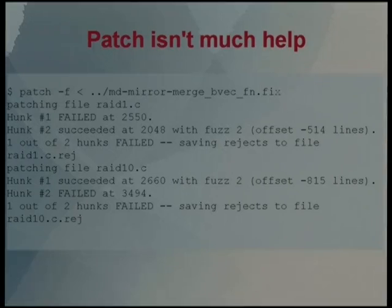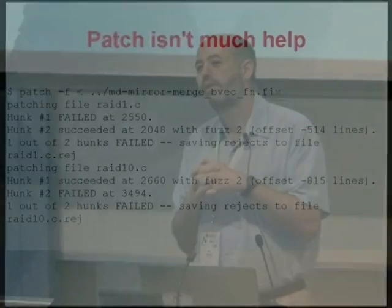When you have a patch that doesn't apply, patch itself isn't much help. It tells you: failed, here it is in a reject file. Or it applied with fuzz. Does everyone know what fuzz is? Fuzz means the patch contains context, and patch couldn't find a match with all that context, but if it throws away a little bit of context, it can find a match. A fuzz of two means it threw away two lines of context, and an offset of 514 lines — was it really 514 lines off? You can't really see what's happening.